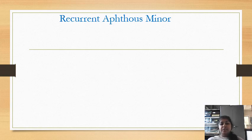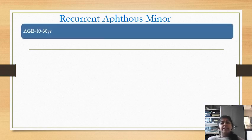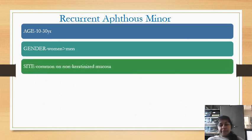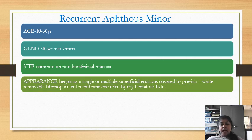Coming to the detailed description of Recurrent Aphthous Minor — this is more common during the age of 10 to 30 years, mainly in young individuals, and women are more commonly affected than men. The common site of occurrence is non-keratinized mucosa, because keratin acts as a protective layer, so it is common in the lip mucosa, tongue, and buccal mucosa. These appear as single or multiple superficial ulcers covered by a greyish-white removable fibrinopurulent membrane encircled by an erythematous halo.